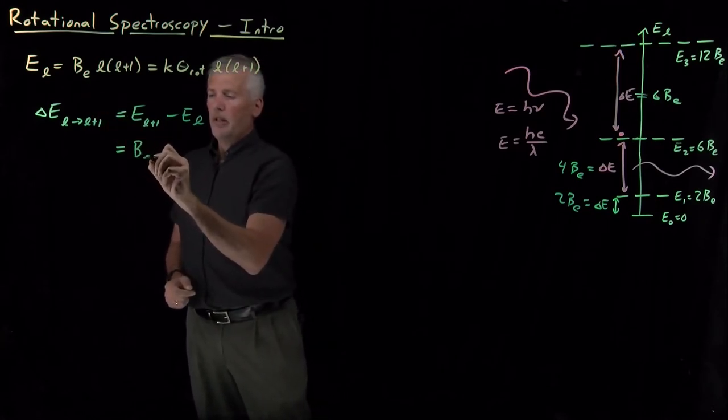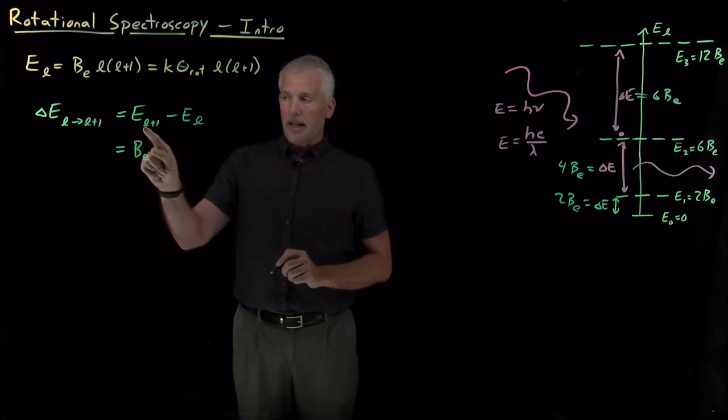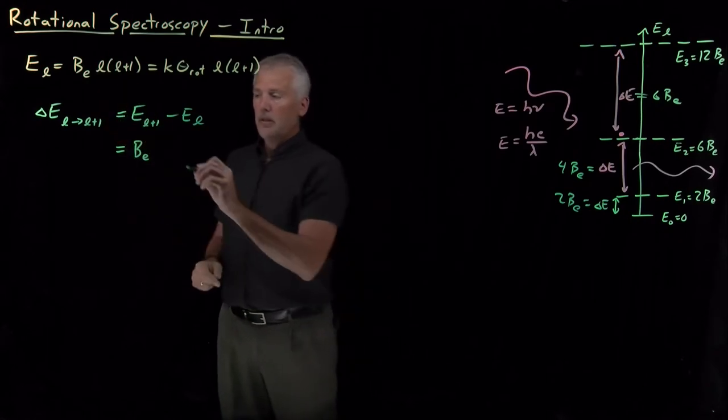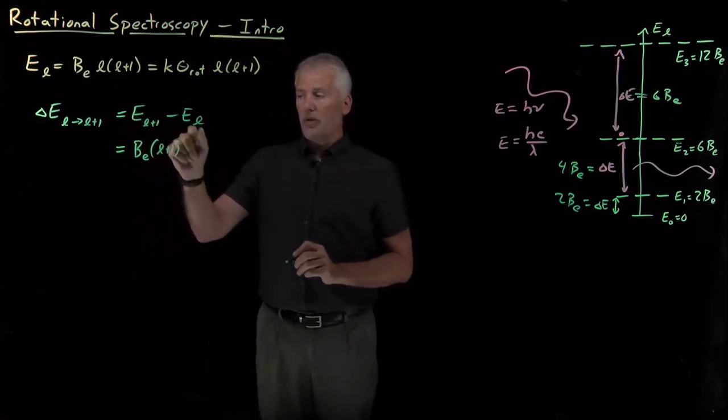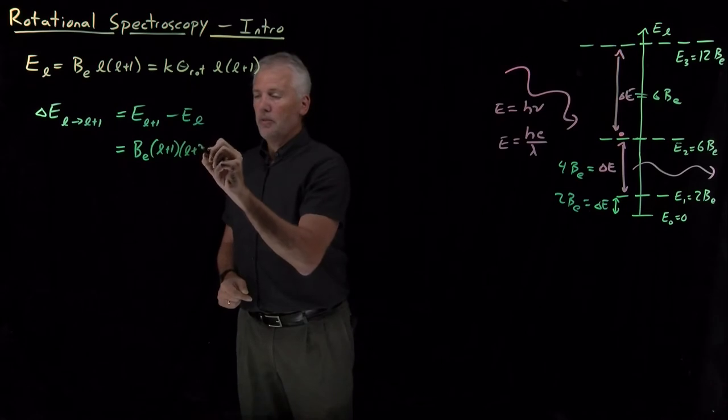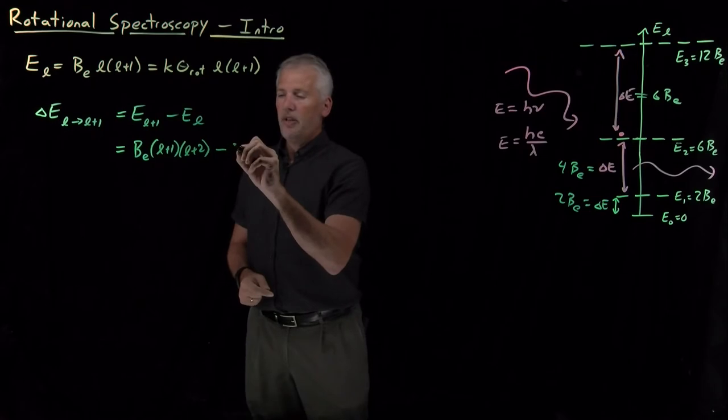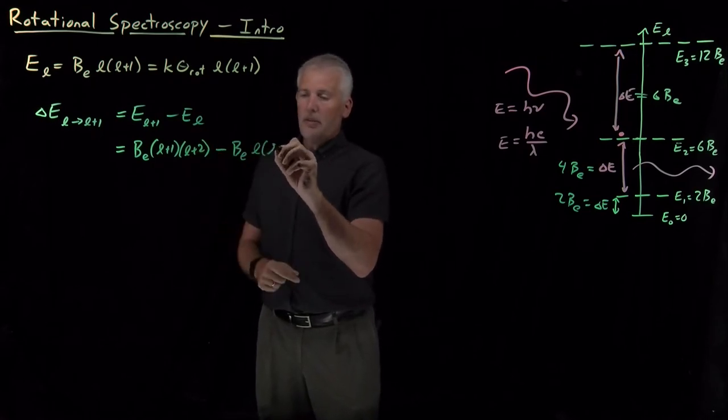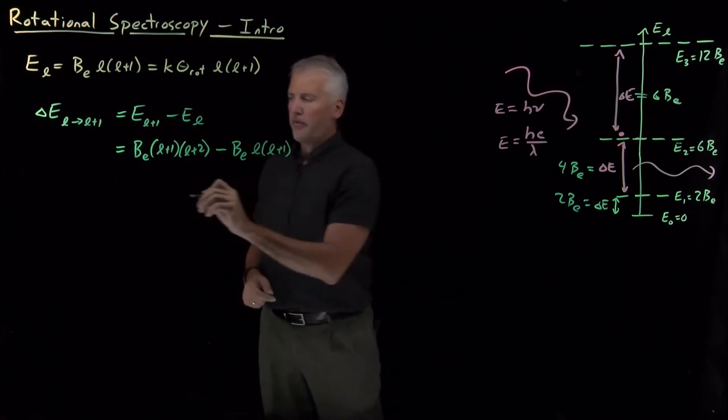We have an expression that tells us how to calculate each of those. So the L+1 level has an energy of a rotational constant not times L and L+1, but when I am asking about the L+1 level, L has the value L+1, and L+1 now is one higher, so that's L+2. So that's the energy of level L+1, and level L is still L times L+1.